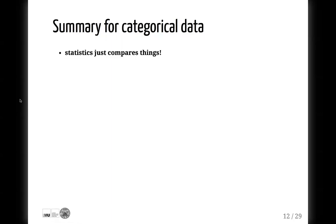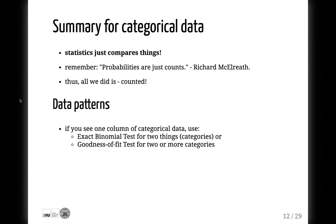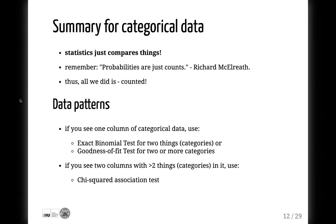Here is a small summary for categorical data. Remember that statistics just compares things. Also remember that probabilities are just counts — no matter how fancy it sounds, all we did until now is count. If you see one column with categorical data, use the exact binomial test for two categories, or chi-square goodness of fit test for two or more categories. If you see two columns with categorical data, simply use the chi-square association test. And if you see a column with numbers, we'll cover that next.